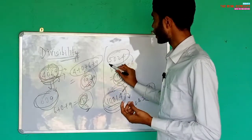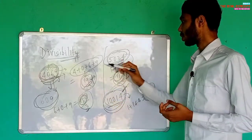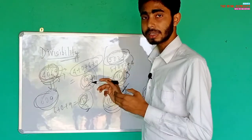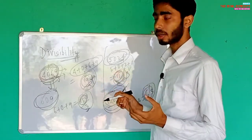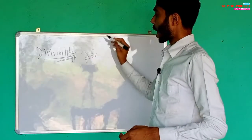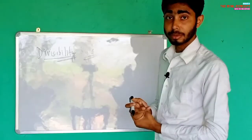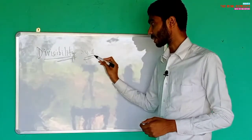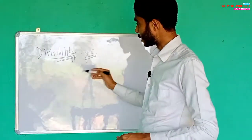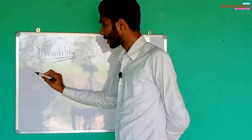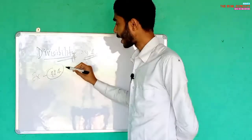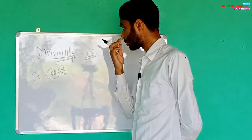So five thousand twenty-four is not completely divisible by three. Now let's start the divisibility of a number by four. How to check divisibility by four? Let's take an example: 404. We need to check whether 404 is divisible by four or not.